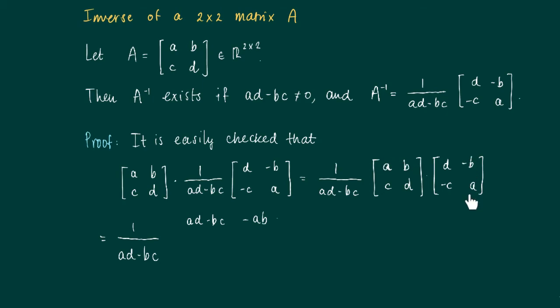First row, second column we get minus ab plus ba.